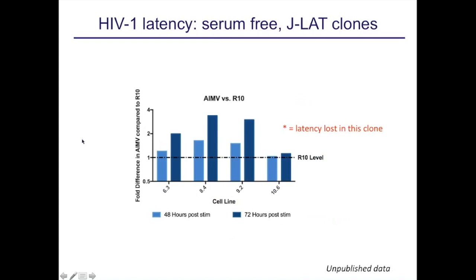Another line we sometimes use is the JLAT, derived from Jurkat cells. They have a reporter measurable by flow cytometry. When we grow these cells in AIM-5 serum-free medium versus R10 medium replete, we see an increase in HIV production from cells grown in AIM-5 medium even by 48 hours, and by 72 hours this increases even more markedly. There was one clone that did not show this increase — interestingly, it was a line that had already lost its latency in our hands and was already producing a lot of virus.